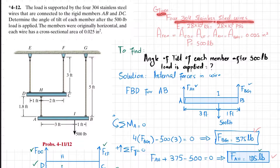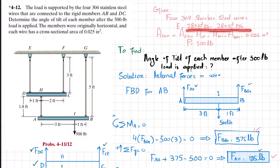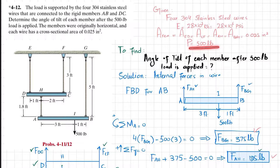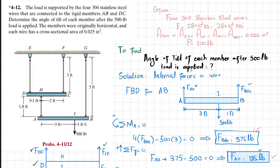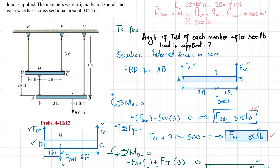The given data: 304 stainless steel wire. Using the property table at the end of the book, the modulus of elasticity for 304 stainless steel is 28 × 10⁶ psi. All wire areas are given as 0.025 in², and the load is 500 pounds. We need to find the angle of tilt of each member after the 500-pound load is applied.